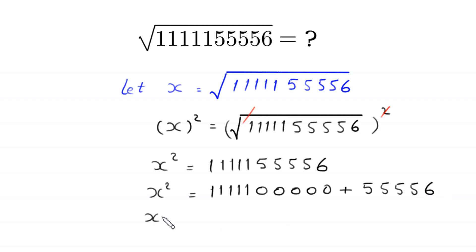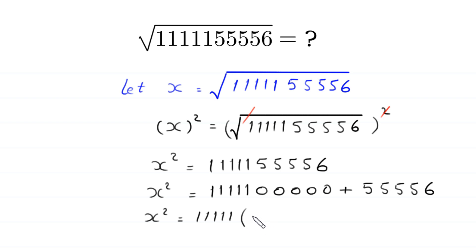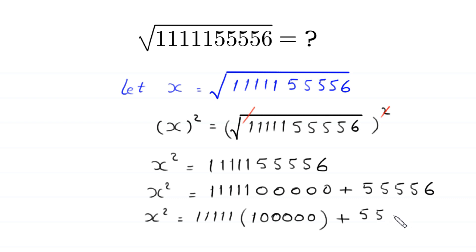Next, x squared is equal to this number, which can be written as the product of two numbers: 111111 times 100000, plus this number can be written as 55555 plus 1.